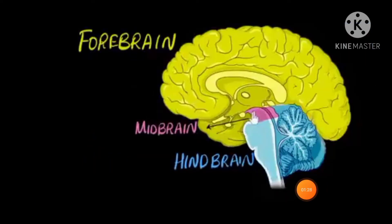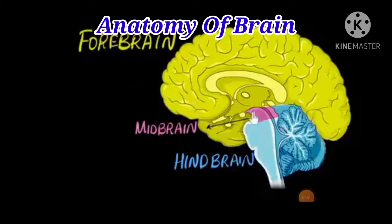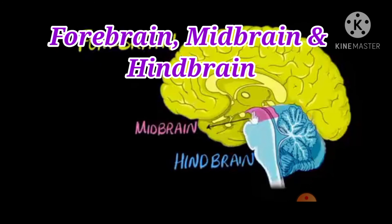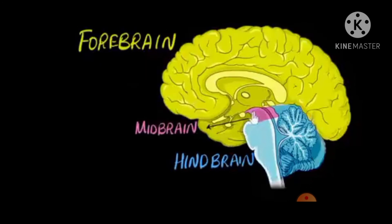Now let us study about the anatomy of the human brain. It consists of three parts: forebrain, midbrain, and hindbrain. In this diagram, the forebrain is shown in yellow, the midbrain is shown in pink, and the hindbrain is shown in blue.